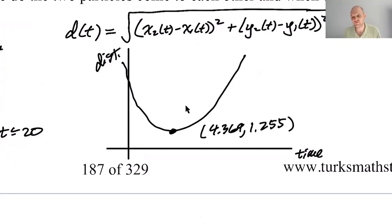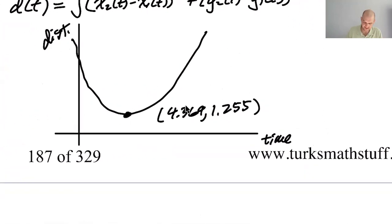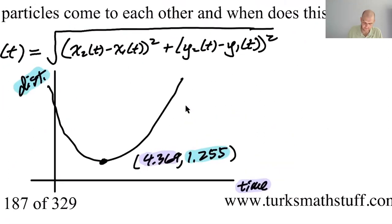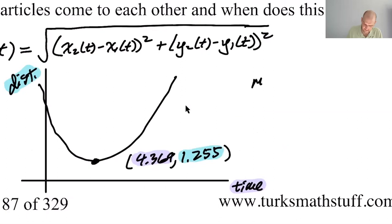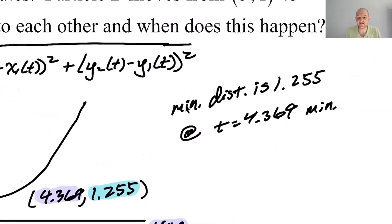Man, I'm going to lose my voice. This is the last video for the day. So it's okay. So this is the time. And this is the distance. So the minimum distance is 1.255 at t equals 4.369. Minutes. So that's the closest they ever get.